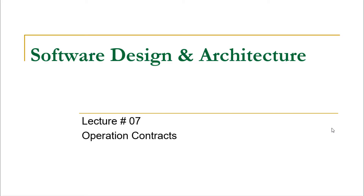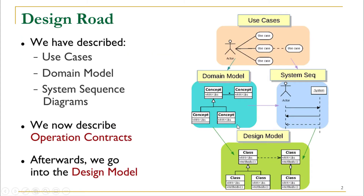Hello everyone and welcome to another lecture on software design and architecture. In this lecture we are going to talk about operation contracts, in continuation to where we were last time. We have already discussed use cases, domain model, and in the last lecture we discussed system sequence diagrams and how they bridge the gap between use cases and the sequence diagrams. Before we jump into the sequence diagrams directly, we are going to describe the operation contracts and afterwards we go down into the design model.